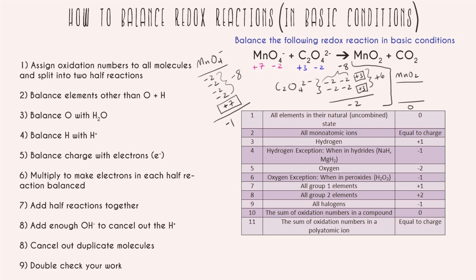Now doing the right-hand side: for MnO₂ the sum is zero because there's no charge on the molecule. Each oxygen is negative two, so the only value that fits for manganese is positive four. For carbon dioxide, we have negative two from each oxygen and one carbon. Since the sum is zero, the carbon must be positive four.